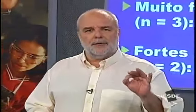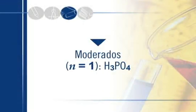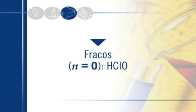Com N igual a 2, temos vários ácidos. Por exemplo, H₂SO₄: 4 menos 2 é 2, isso é um ácido forte. Já os moderados são aqueles que apresentam N igual a 1; um dos mais importantes é o H₃PO₄. E finalmente, ácidos fracos apresentam N igual a 0. Um exemplo interessante: HClO, ácido hipocloroso.